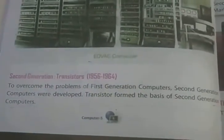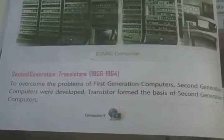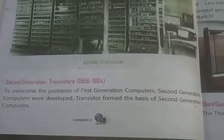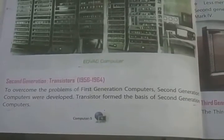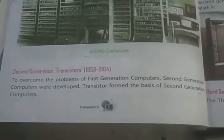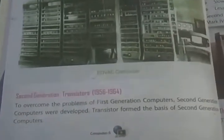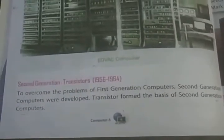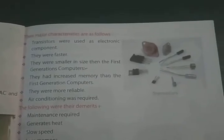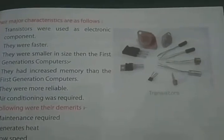Next come second generation computers, which used transistors, from 1956 to 1964. To overcome the problems with first generation computers, second generation computers were developed. Transistors form the basis of the second generation computers. Transistors were used as electronic components.